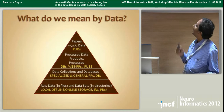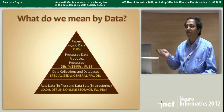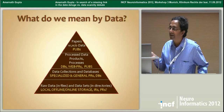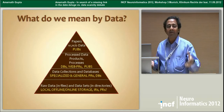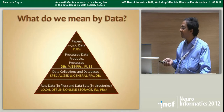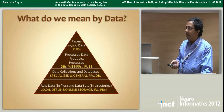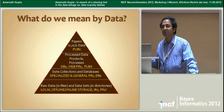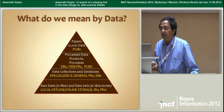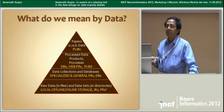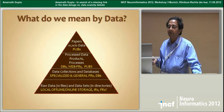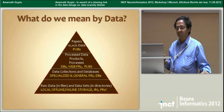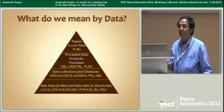It starts from raw data, which are in files, and maybe it's not even in files. It's on hard disks in your drawer. They may be in repositories, but typically not. And some of the data would be lucky enough that it has been processed and somewhat cleaned up.